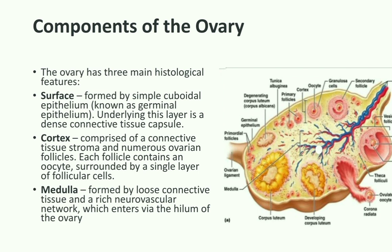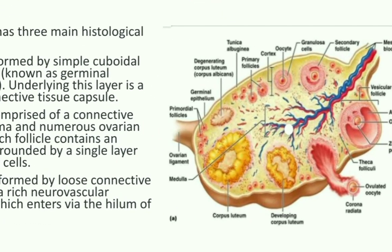The cortex contains the ovarian follicles at different stages, connective tissue cells, and interstitial cells which form the theca interna. The anterior border is attached to the broad ligament, while the posterior border of the ovary is free and is related to the ampullary part of the fallopian tube. During intrauterine life, around six million primordial follicles are formed in the ovaries.